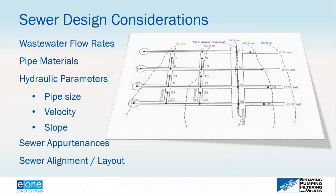When looking at design considerations, there are many similarities and differences between gravity sewer systems and pressure sewer systems. Key similarities include wastewater flow rates — the objective of any wastewater collection system is to move wastewater from point A to point B. Pipe materials are also often similar between modern gravity and pressure sewer systems. Hydraulic parameters such as velocity, flow, pipe size, and in the case of gravity sewer systems, the slope of the pipe, are all important because slope maintains proper velocity.